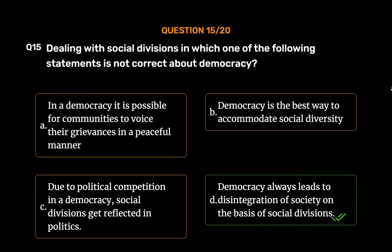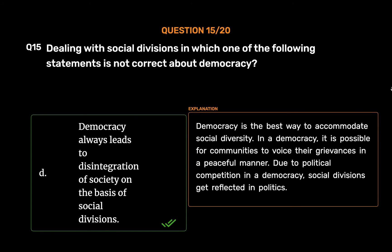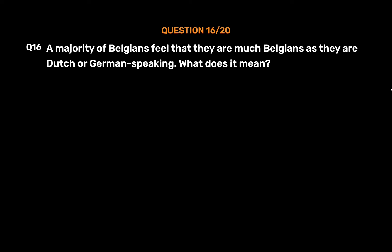The correct answer is Option D: Democracy always leads to disintegration of society on the basis of social divisions. Democracy is the best way to accommodate social diversity. In a democracy, it is possible for communities to voice their grievances peacefully, and social divisions get reflected in politics.